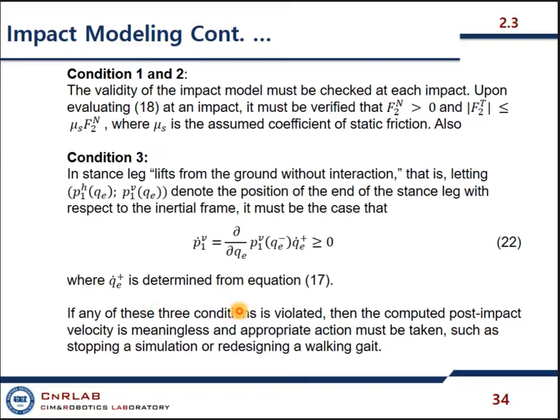The velocity of that vertical position should be greater than zero, where QE plus is determined from equation number 17. If any of these conditions is violated, then computed post-impact velocity is meaningless and appropriate action must be taken, such as stopping the simulation or redesigning a working gait.